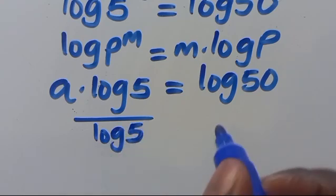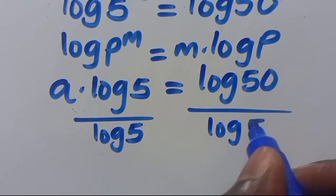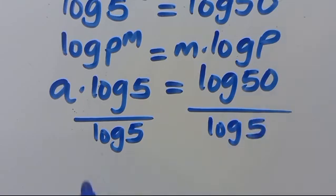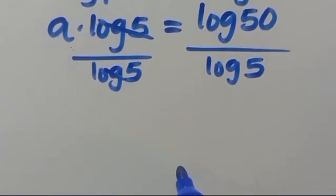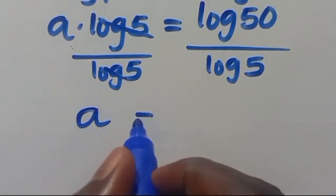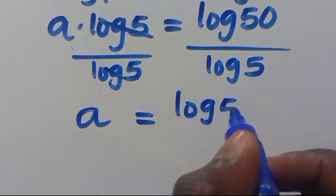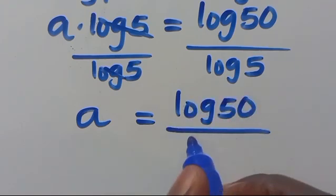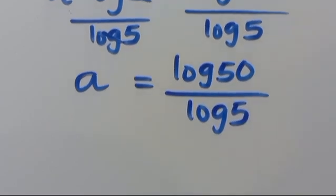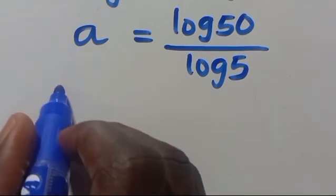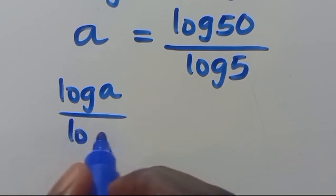So dividing both sides by the coefficient of a, which is log 5, we have a equals log 50 over log 5. We can also recall that log a over log b equals log base b of a.